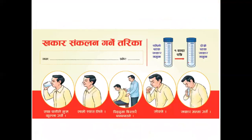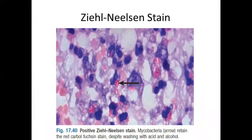For sputum collection: sputum is collected twice — first at presentation and then a second sample collected one hour later. The Ziehl-Neelsen staining slide shows acid-fast bacilli marked by black arrows. You can see that there is retention of the red carbol-fuchsin stain despite washing with acid and alcohol.